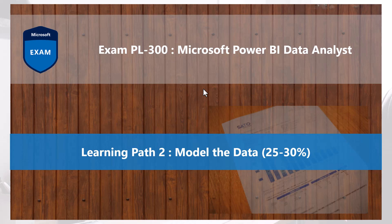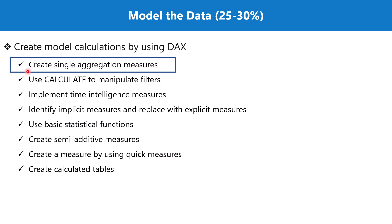Welcome back to the PL-300 exam preparation series. In this video, we are going to cover the topic 'create single aggregation measures,' which is part of the section 'create model calculations using DAX.' In the previous video we talked about measures, implicit measures, and how these can be replaced by explicit measures. Now we are going to talk about a specific category called single aggregation measures, which operate on single columns.